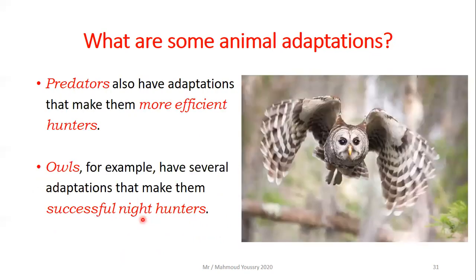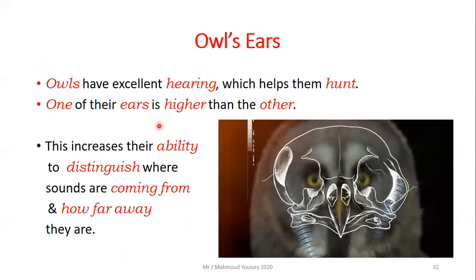Predators also have adaptations that make them more efficient hunters. Owls have several adaptations that make them successful night hunters, as owls are nocturnal. Owls have excellent hearing which helps them hunt. One of their ears is higher than the other, as seen in the drawing of the owl's skull. This increases their ability to distinguish where sounds are coming from and how far away they are.